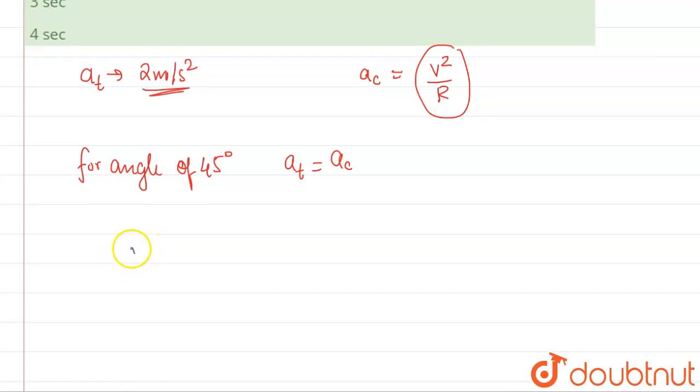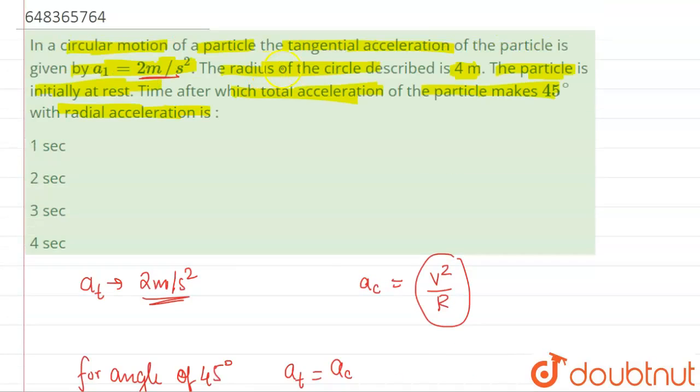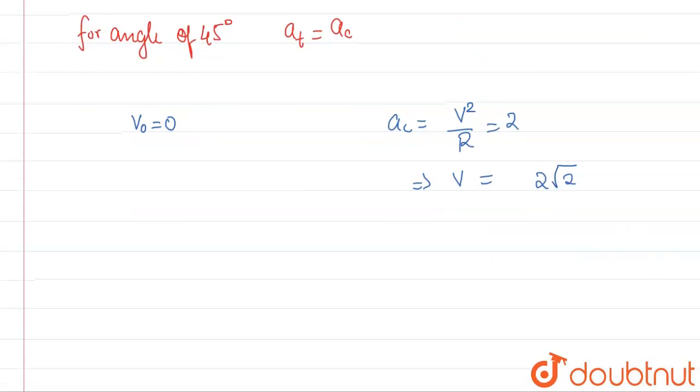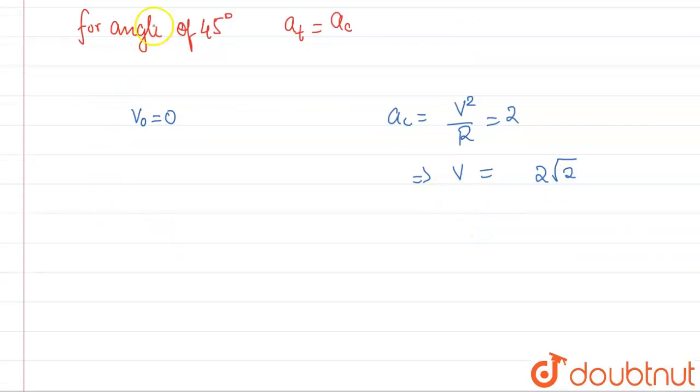Initially the velocity was zero. Finally, ac will be equal to v square upon r which will be equal to 2. So we will have v will be equal to under root of 2 into r. What is r? r is 4 meters. So this will be 4. So basically this will come out to be 2 root 2.